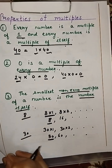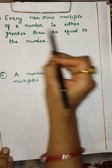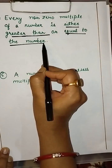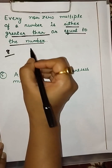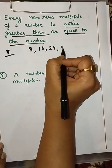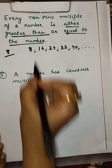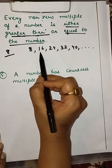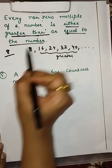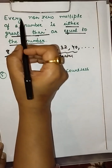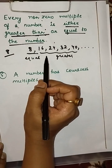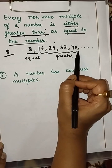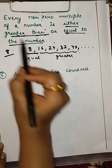Fourth property: every non-zero multiple of a number is either greater than or equal to the number. For example, multiples of 8 are 8, 16, 24, 32, 40 — all are greater than or equal to 8. The first multiple, 8 into 1, equals the number itself; all others are greater. This is the fourth property of multiples.